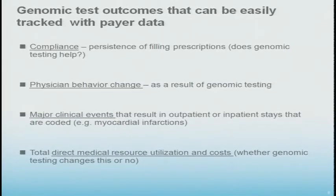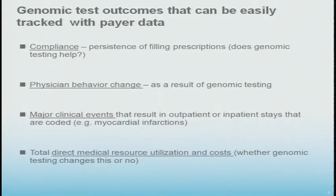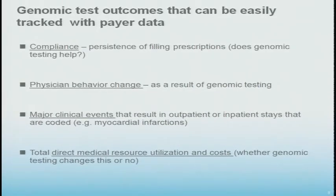Some of the buckets of things we can look at: does genomic test information result in differences in compliance — the fear factor? Can you motivate people based on their genomic information to stay on therapy? In our world, about 50% of people drop off chronic meds in the first year despite explaining how important it is. Genomic information may be that extra piece that motivates them to stay on therapy. We're actually looking at that today, as well as physician behavior change and major clinical events and resource utilization.